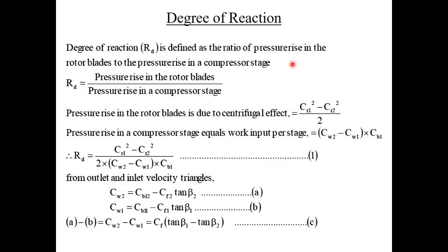Next topic is degree of reaction. Degree of reaction, R suffix D, is defined as the ratio of pressure rise in the rotor blades to the pressure rise in a compressor stage. The pressure rise in the rotor blades due to centrifugal effect is (CR1² − CR2²)/2, where CR1 and CR2 are relative velocities at inlet and outlet. The pressure rise in a compressor stage equals work input per stage: (CW2 − CW1) × CBL. So degree of reaction R_D = (CR1² − CR2²) / [2 × (CW2 − CW1) × CBL]. This is equation 1.